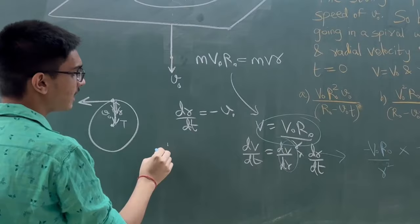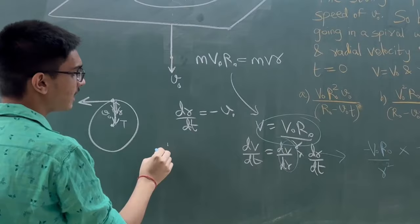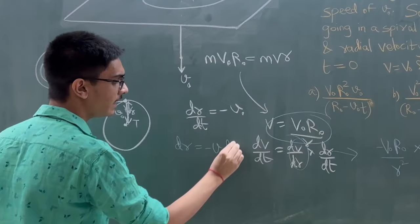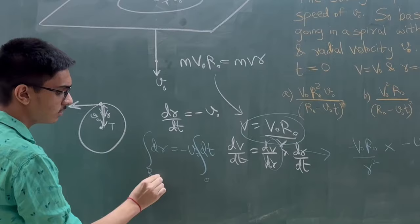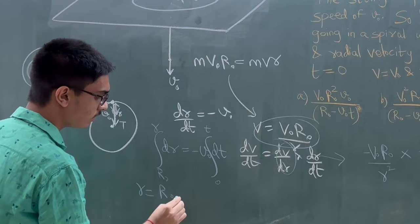If we integrate this, dr is equal to minus u₀·dt. Integration: at t equals 0, the radius is r₀; at this instant of time t, it's r. So r is equal to r₀ minus u₀·t.